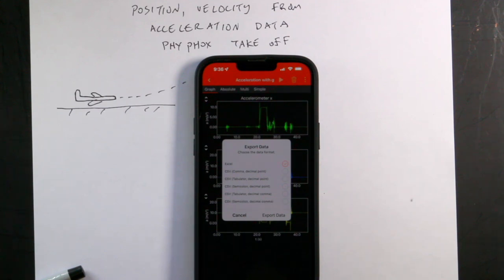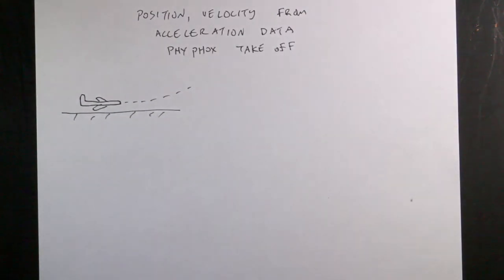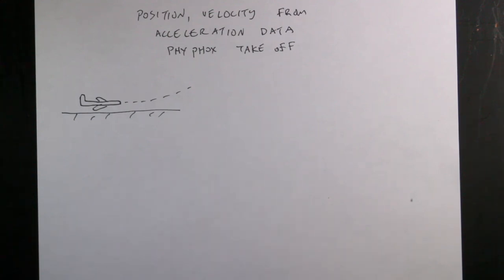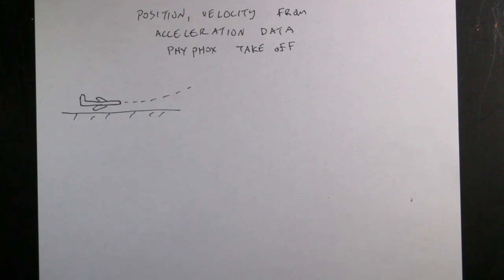Once I get the data as a spreadsheet, I want to analyze it. From the acceleration data, I want to plot the position of the plane as a function of time. We have to make some assumptions, but I think we can do it. Let's start with the Y direction, because that's the one we really care about.